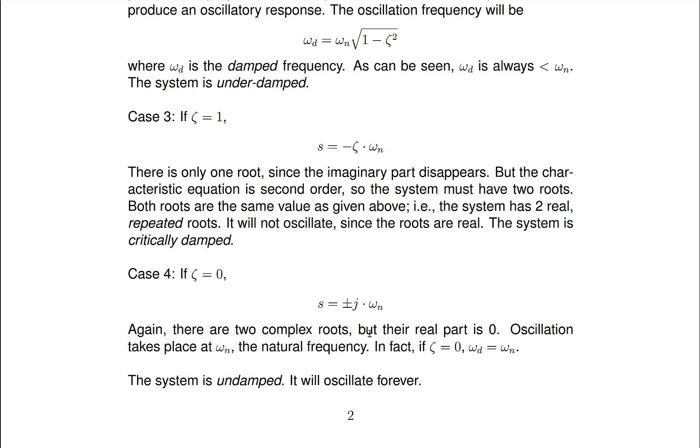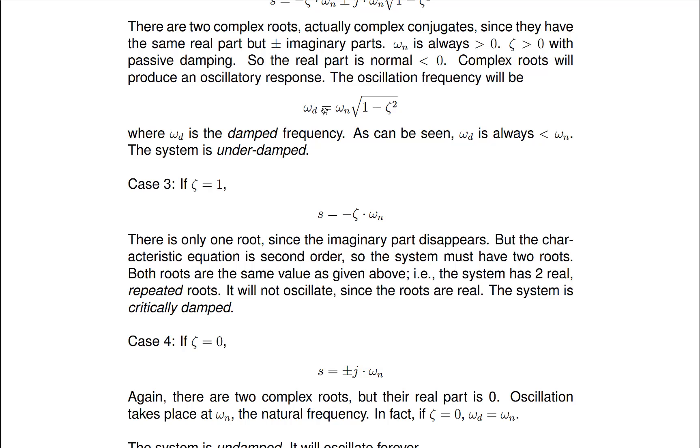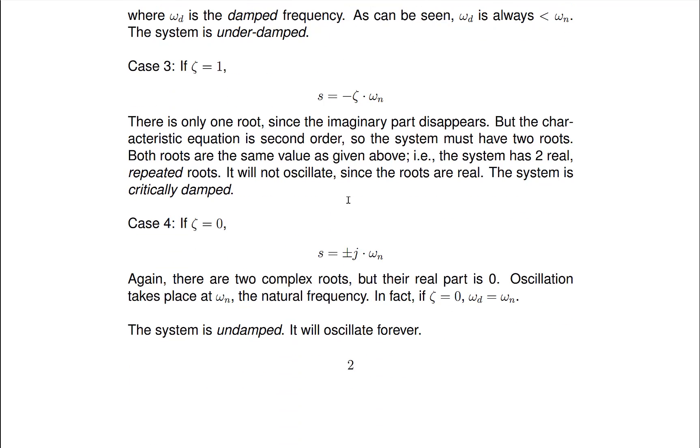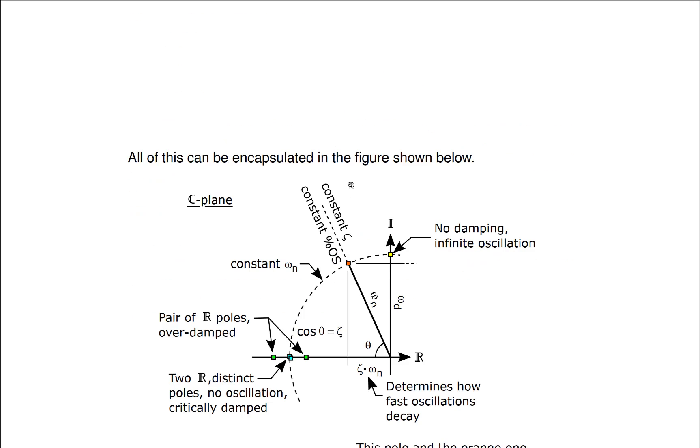Also, if you look at the equation for omega d, if zeta is equal to zero, omega n and omega d are the same thing. And this is the undamped case. So there's no damping and the system will oscillate forever.